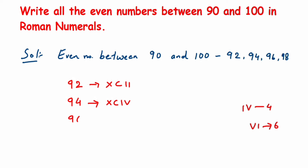For 96, we write XC for 90, then 5 is V, then I — giving us VI which is 6. So 96 is XCVI. The last number is 98: XC for 90, then V for 5, then three vertical lines (III) for 3, giving us XCVIII.